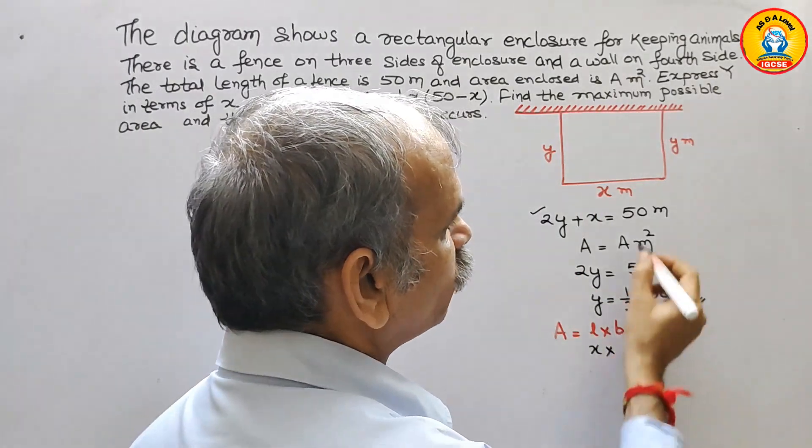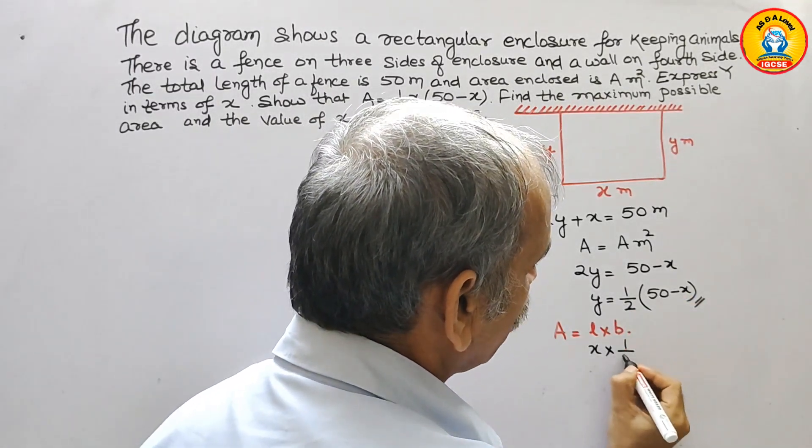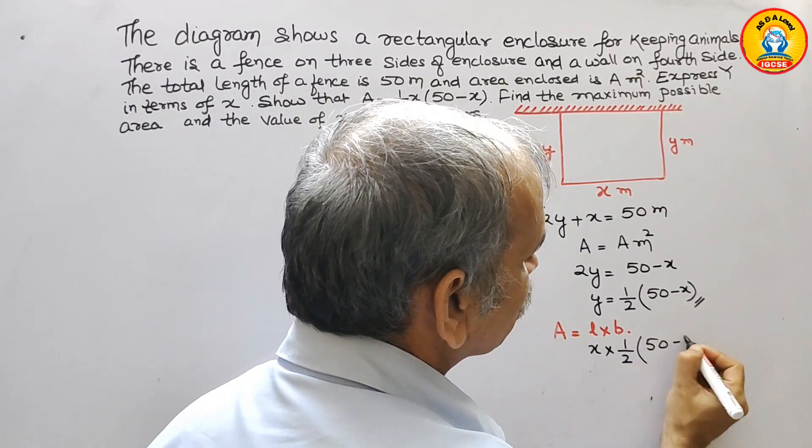Breadth is y. So y is this value. So we can write it as 1 by 2 times 50 minus x.